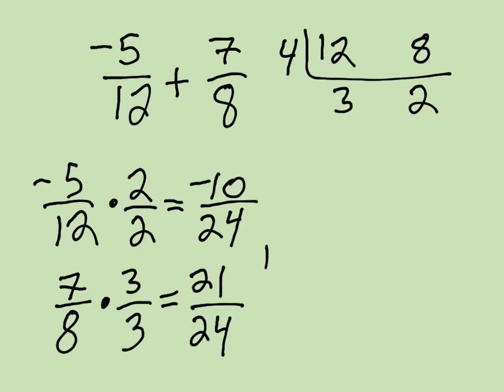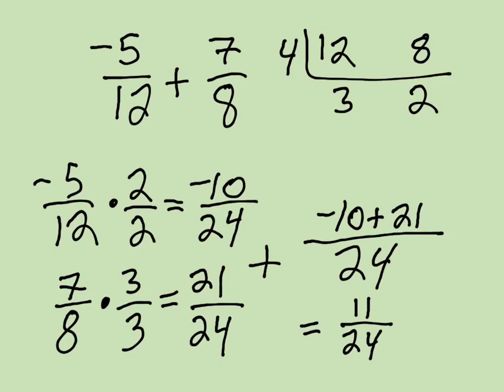And then when I add these, we're going to get 24 in our denominator, and we're going to just have here negative 10 plus 21. Well, that's just adding integers with different signs. And if you remember how to add integers with different signs, you just find the difference. So the difference between 10 and 21 is 11. And you take the sign of the bigger number. In this case, it's 21. And so that is a positive 11 24ths.